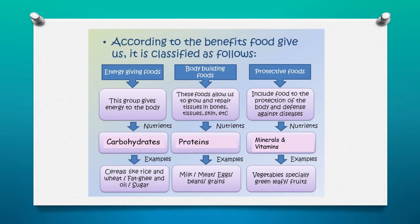Now we can see in the given tabular form how food helps us, or how it is classified according to its benefits. Food is classified into three different types: energy-giving food, body-building food, and protective food.